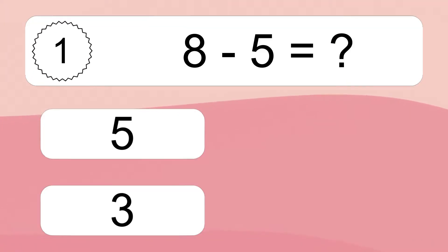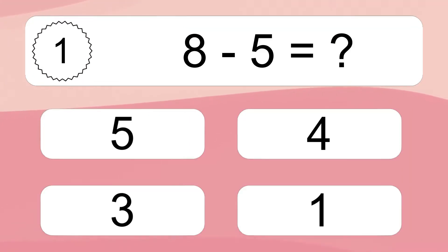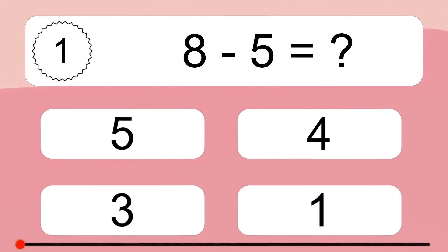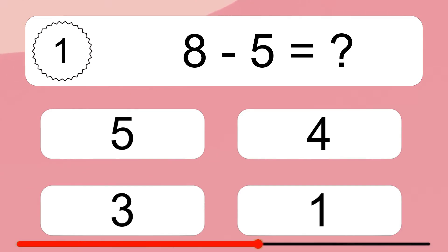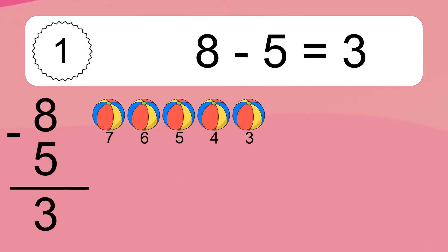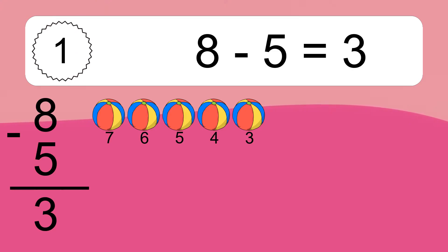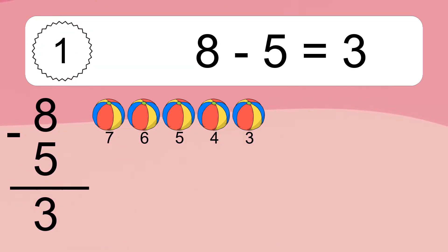8 minus 5 equals what? 8 minus 5 equals 3. Let's count it: 7, 6, 5, 4, 3.